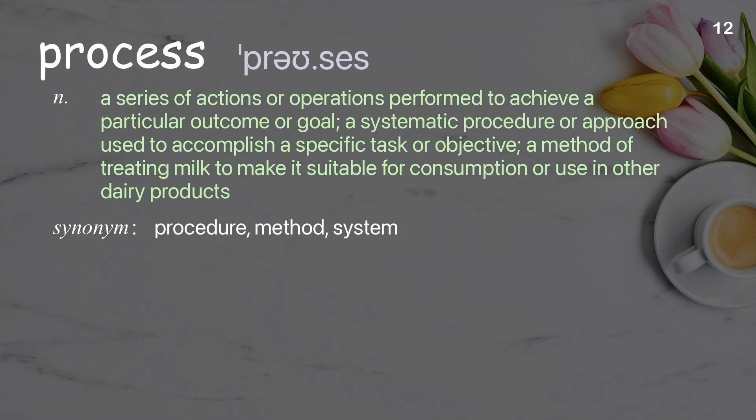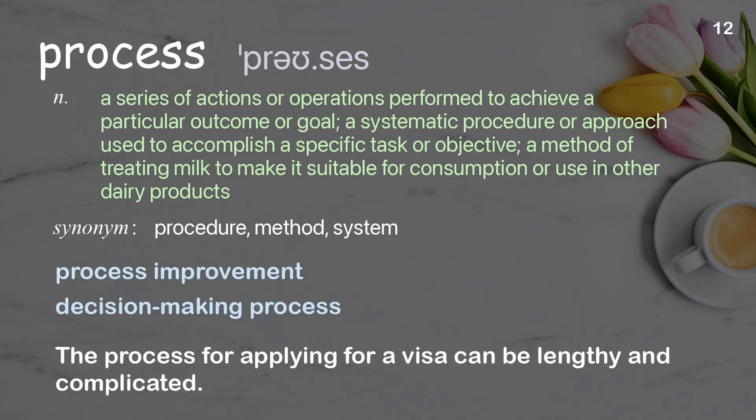Process: a series of actions or operations performed to achieve a particular outcome or goal; a systematic procedure or approach used to accomplish a specific task or objective. Examples: process improvement, decision-making process. The process for applying for a visa can be lengthy and complicated.